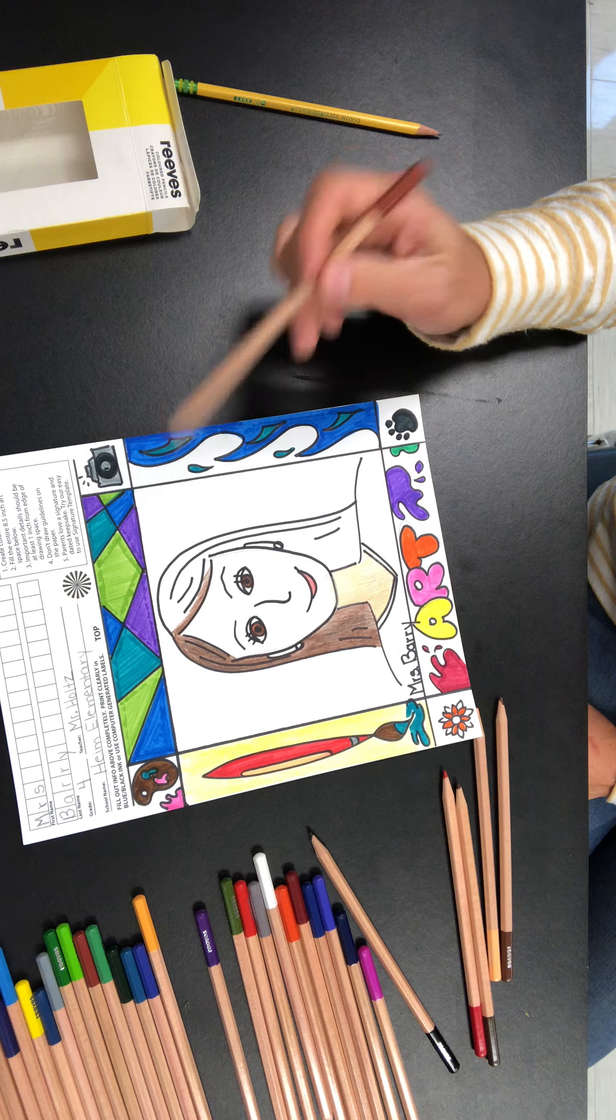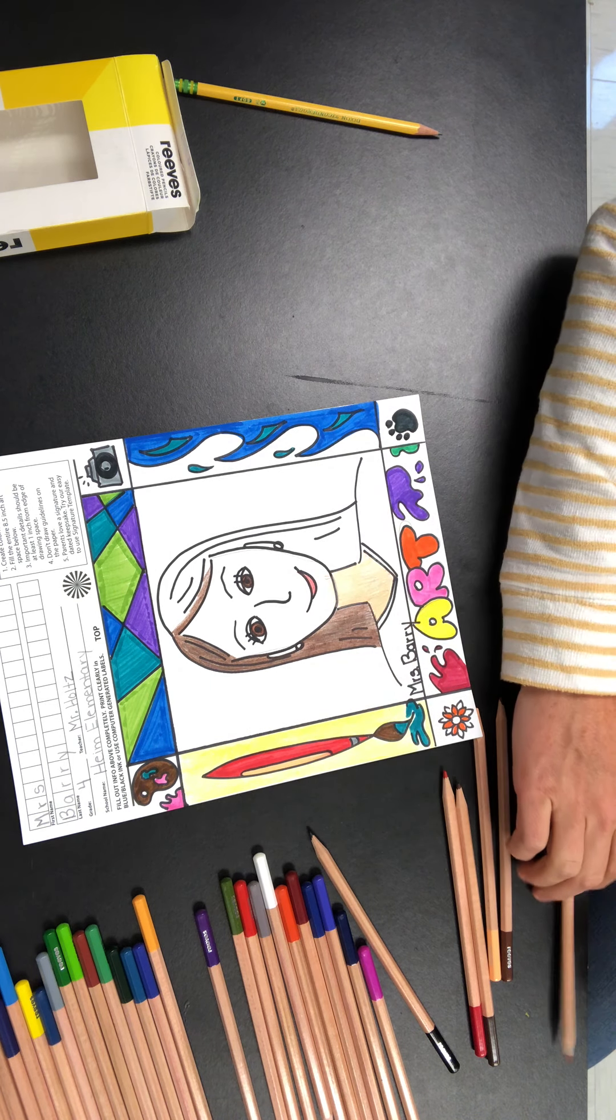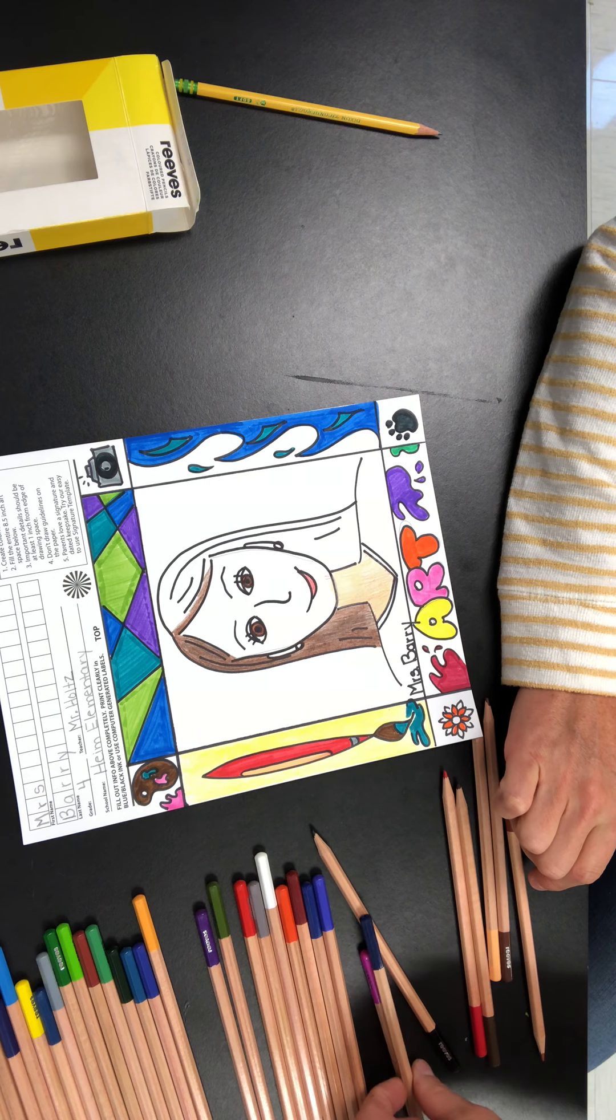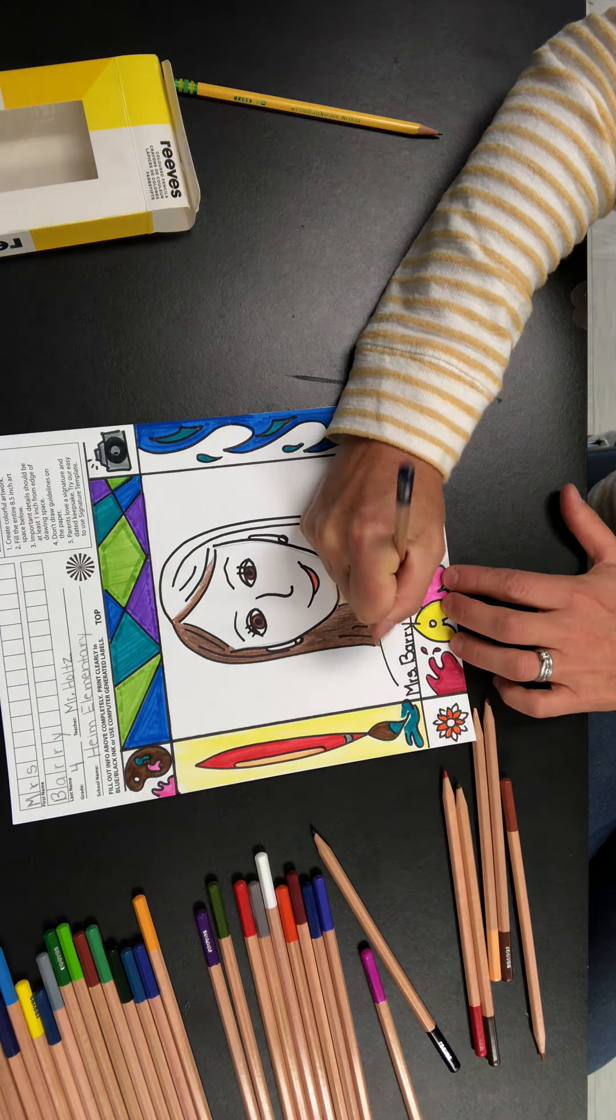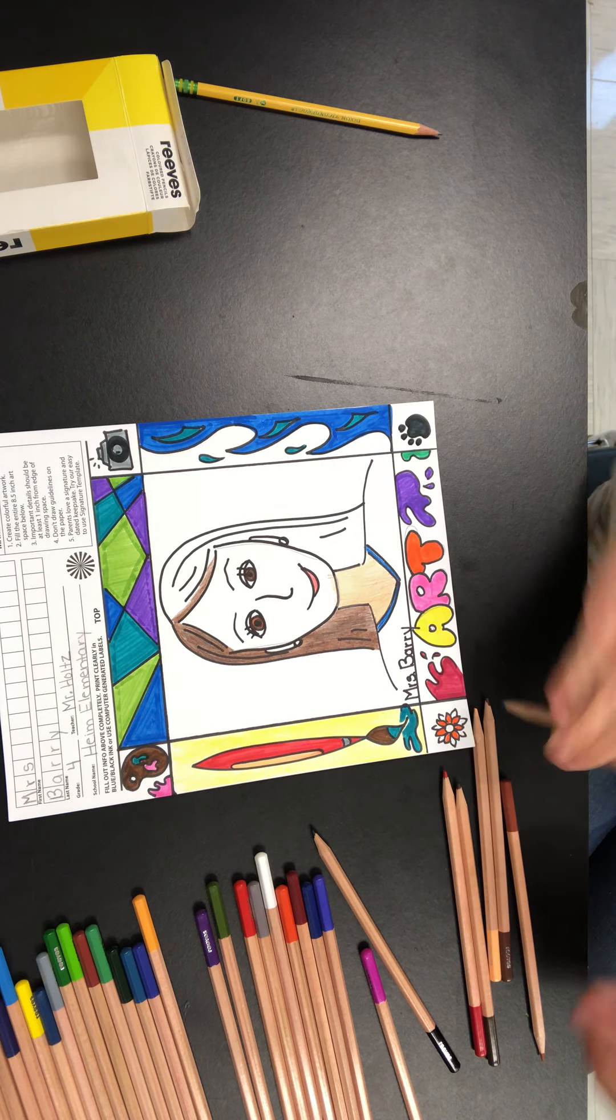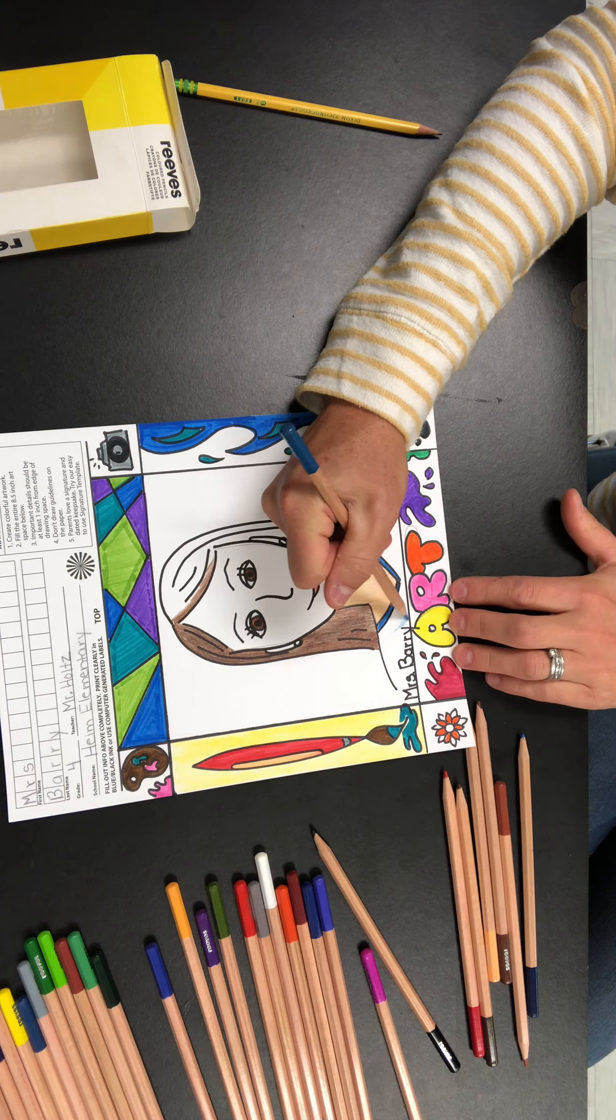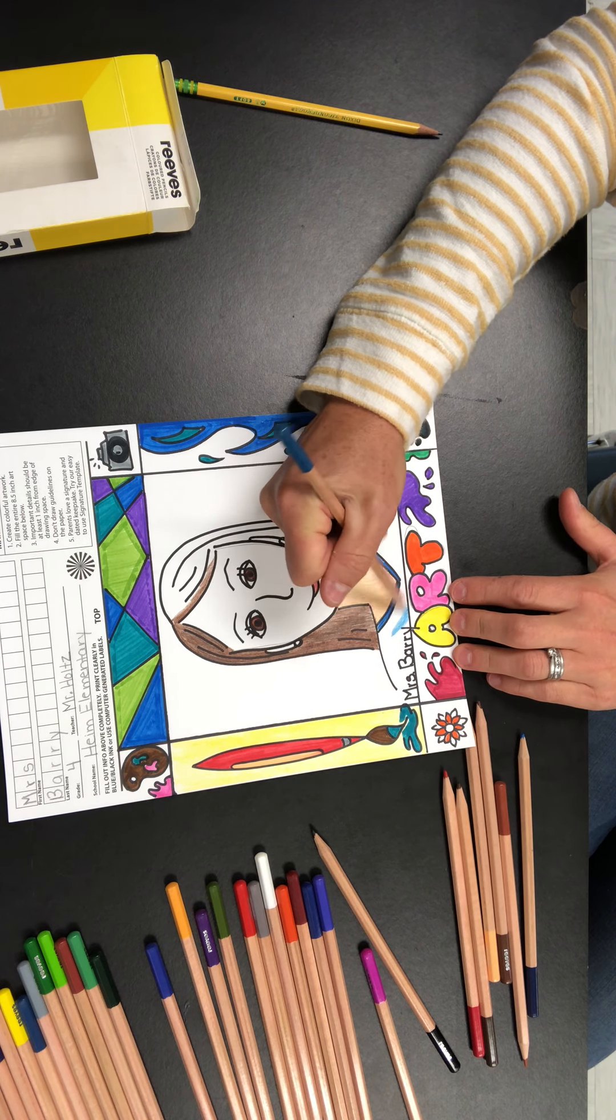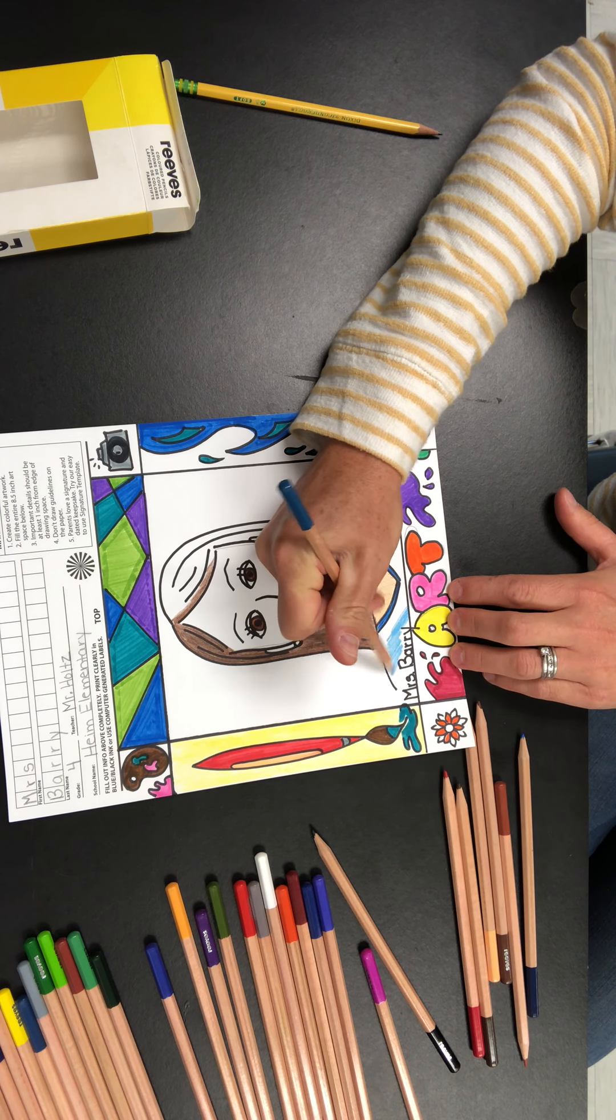All right, so you're going to work on your self-portrait, and then your background. You can do any type of background you want. Oh, let me just mention the shirt as well. I'm going to do blue. I'm not wearing a blue shirt today, but blue is my favorite color. So I'm going to have some fun around my name. I want people to see it.